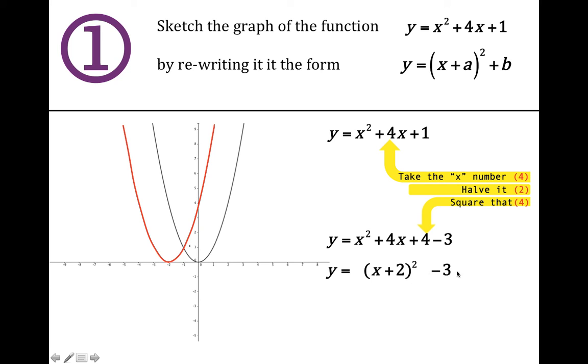And then we've got the minus 3 bit which causes the whole thing to shift vertically down by 3 units. So we end up with the same graph but it has a vertex at minus 2 minus 3.